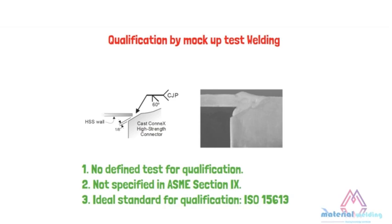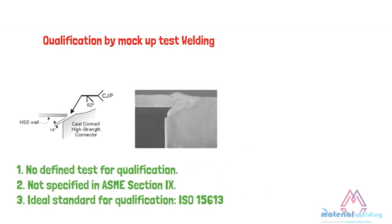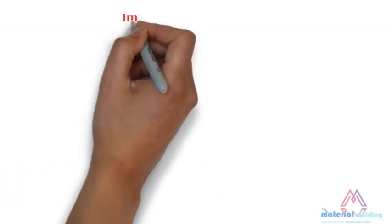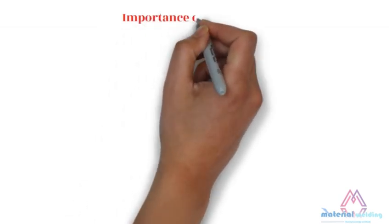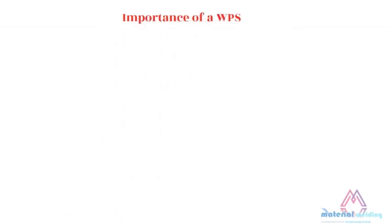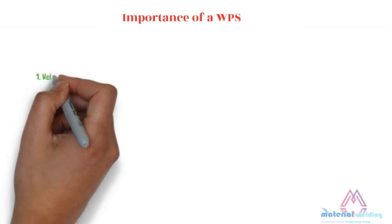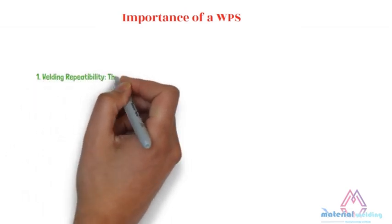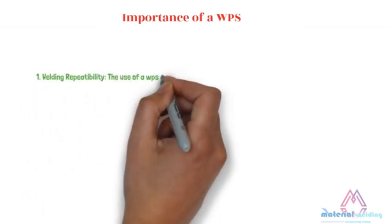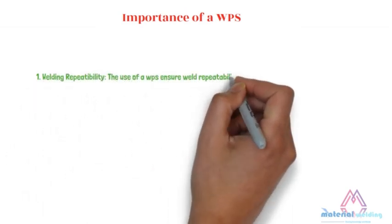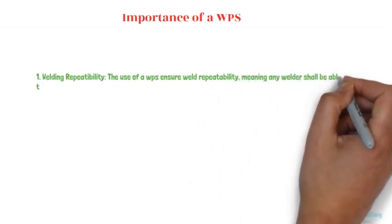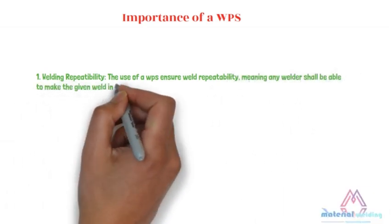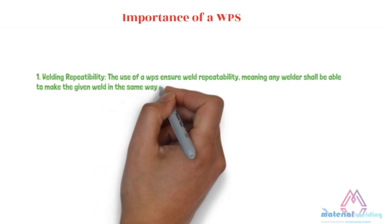Usually, welding macro, surface NDT, and visual inspection are the most suitable tests for these types of WPS qualification. A WPS is important for a number of purposes. Number one: welding repeatability. The use of a WPS ensures weld repeatability, meaning any welder shall be able to make the given weld in the same way every time.